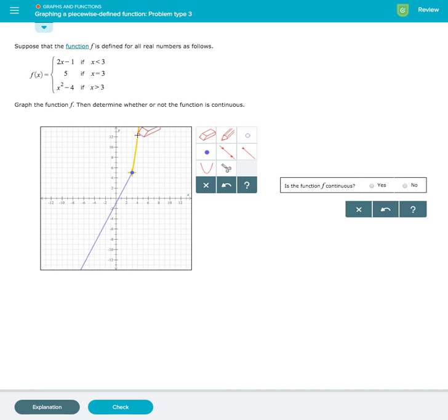So now we have our final piecewise function. We also have to answer the question, is the function f continuous? Because we start from negative infinity, and go to this solid point here, which is included, and continues on. The function is indeed continuous.